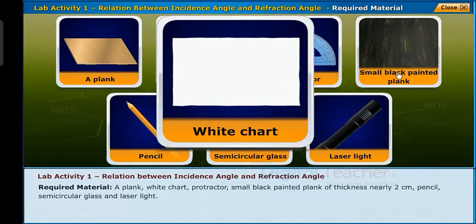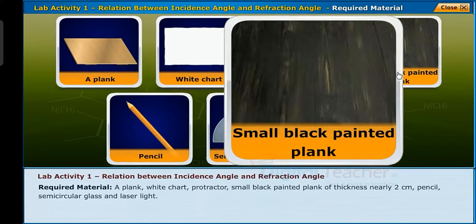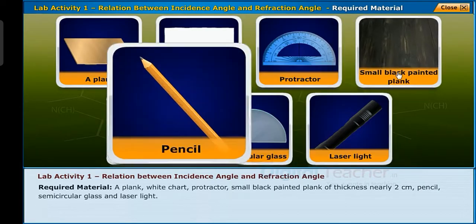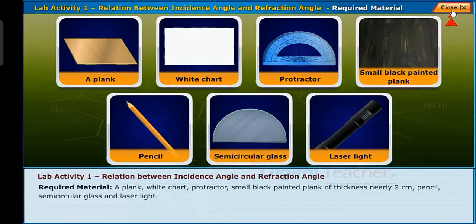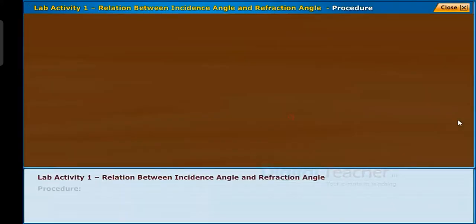The required materials used in the experiment are a plank, white chart, protractor, small black painted plank of thickness nearly two centimeters, pencil, semicircular glass, and laser light.